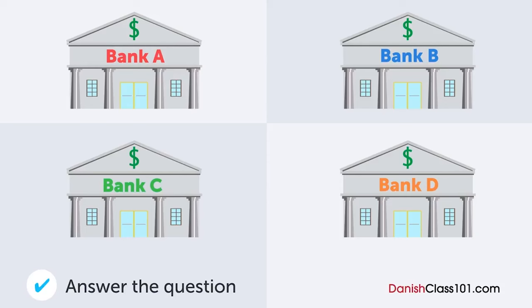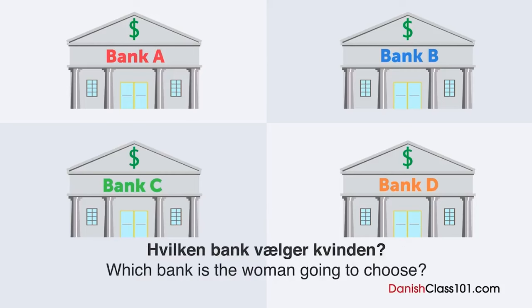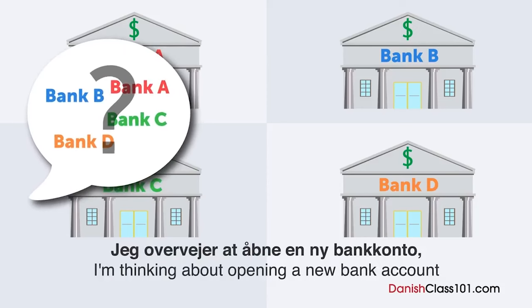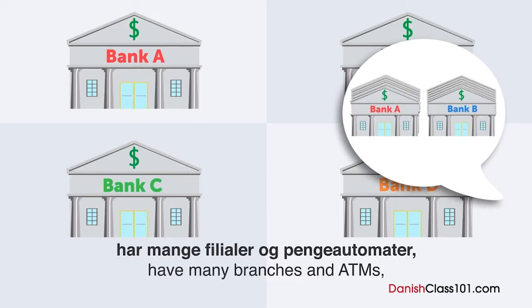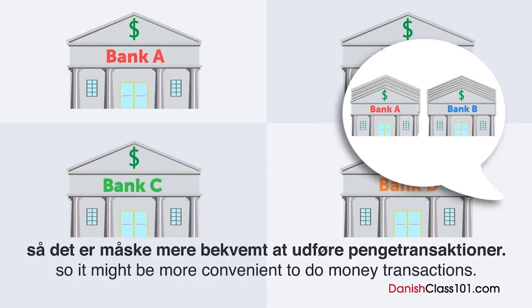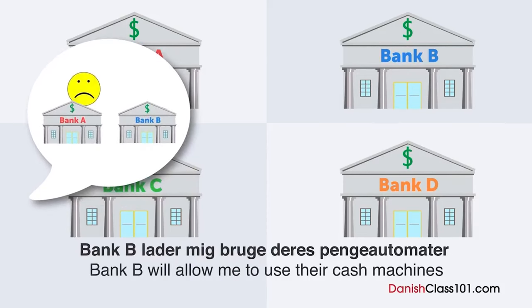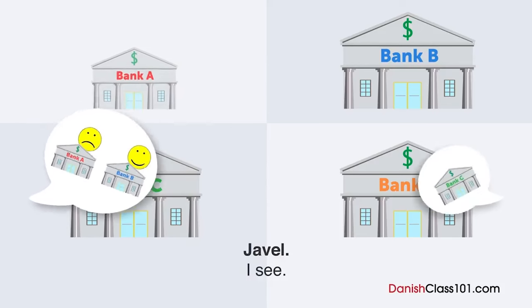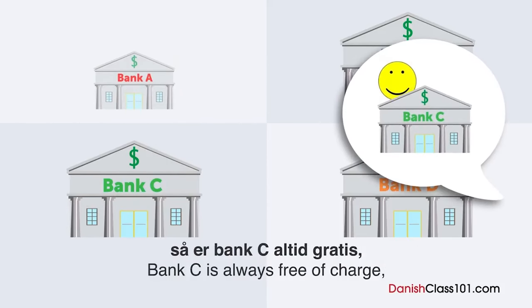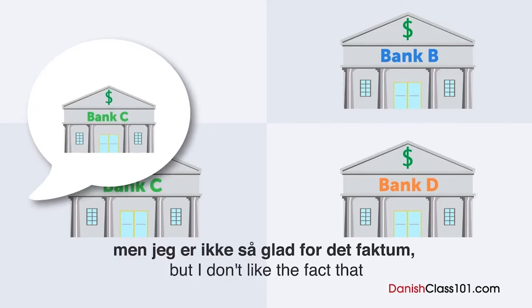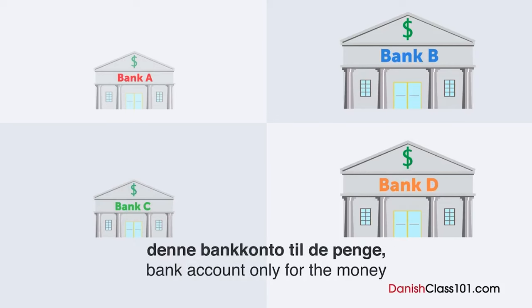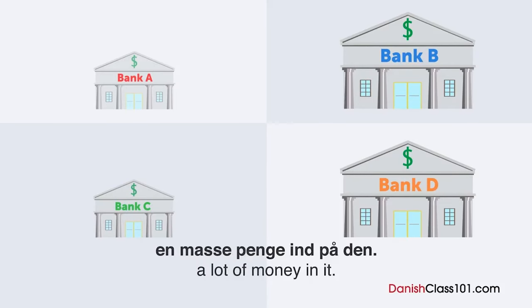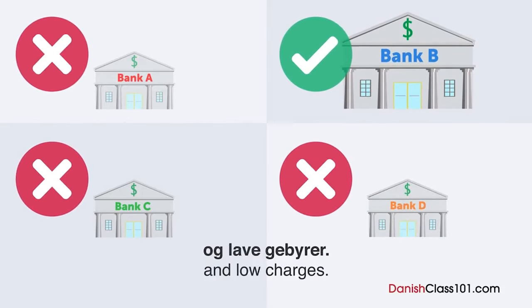Hvilken bank vælger kvinden? En mand og en kvinde snakker om banker. Jeg overvejer at åbne en ny bankkonto til mit deltidsjob. Både Bank A og Bank B har mange filialer og pengeautomater. Bank A tager penge for pengeautomater. Bank B lader dig bruge pengeautomater gratis i dagstimerne på hverdagen. Bank C er altid gratis men har ikke så mange pengeautomater. Bank D er bedst for rentesatser, men jeg har ingen plan om at sætte mange penge ind. Så bør du vælge den med mange pengeautomater og lave gebyr. Tak for dit råd.